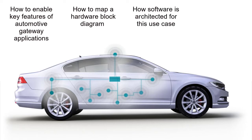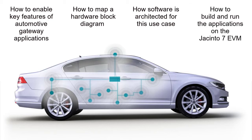Next, we will look at the overall software architecture for developing gateway applications on the Jacinto 7 platform. As part of this, we will look at the various SDK components and details of how they are deployed on the Jacinto 7 platform. We will then look at how to build and run the two gateway-centric demos included in the Processor SDK: the CAN-Ethernet bridging application and the Ethernet traffic routing and filtering application.